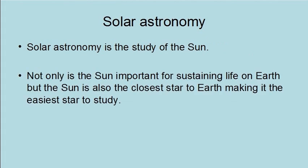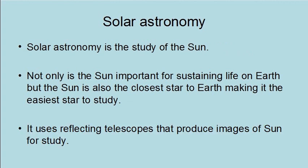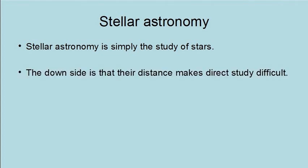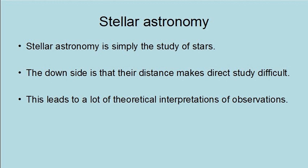Solar astronomy is the study of the sun. Not only is the sun important for sustaining life on Earth, but it is also the closest star, making it the easiest star to study. It uses reflecting telescopes that produce images of the sun for study. Stellar astronomy is simply the study of stars. The downside is that their distance makes direct study difficult, which leads to a lot of theoretical interpretations of observations.